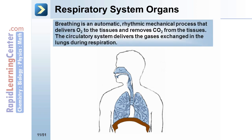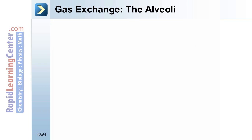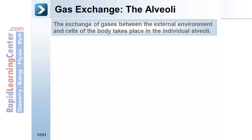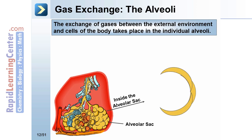Breathing is an automatic, rhythmic, mechanical process which delivers O2 to the tissues and removes CO2 from the tissues. The circulatory system delivers the gases exchanged in the lungs during respiration. The exchange of gases between the external environment and the cells of the body takes place in the individual alveolus. Here's the alveolar sac — let's take a look inside.